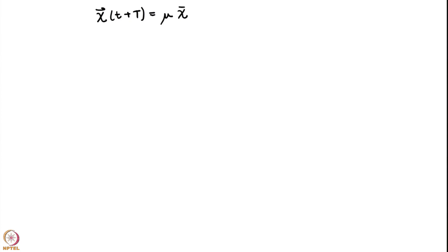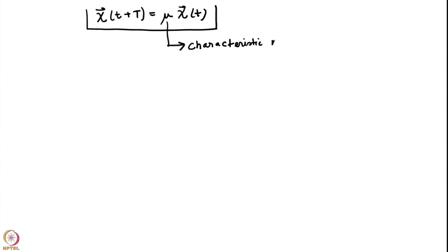You can go over the various steps in case things are not clear. This number μ, which could possibly be complex, is called a characteristic number of the system. Now, what can we use the Floquet theorem for? We can use it to determine the structure of the solutions to an equation whose coefficients are time-periodic.